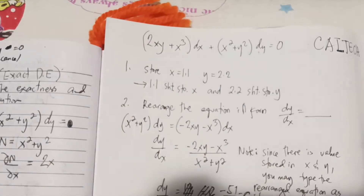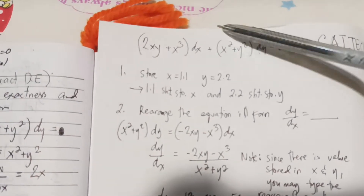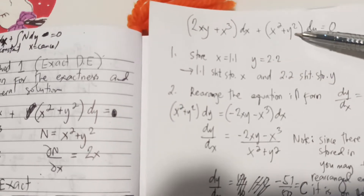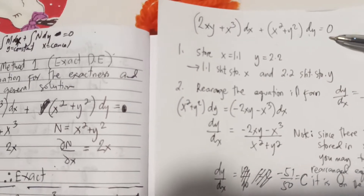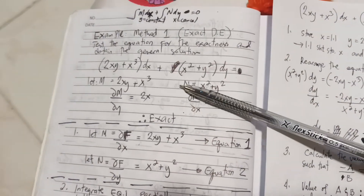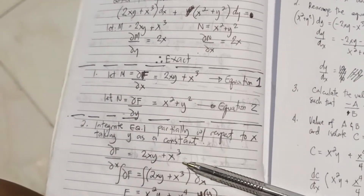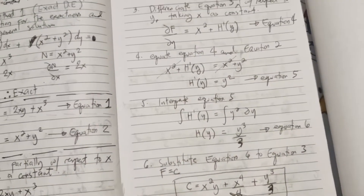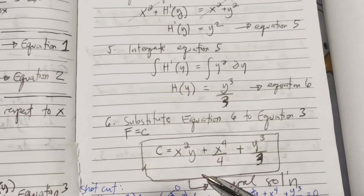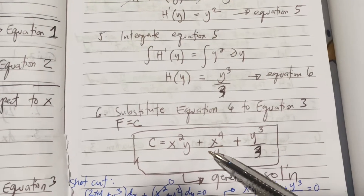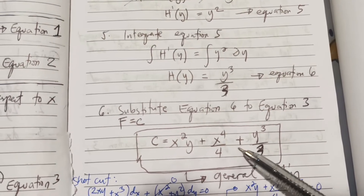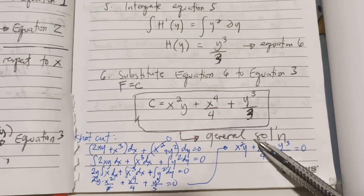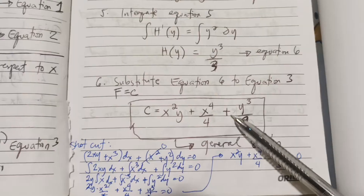We have an example: (2xy + x³)dx + (x² + y²)dy = 0. Solving this manually, we get the solution c = x²y + x⁴/4 + y³/3. We also have a shortcut method and it gives the same answer.